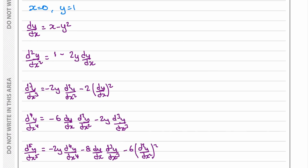We were told in the question that y = 1 when x = 0. So dy/dx = x minus y² = 0 minus 1 = negative 1. The second derivative equals 1 minus 2y times dy/dx = 1 minus 2 times 1 times negative 1, which gives 1 plus 2 = 3.